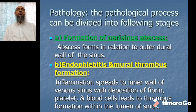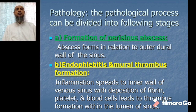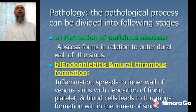The pathological process of lateral sinus thrombosis can be divided into four stages: number one, the formation of the peri-sinus abscess; number two, endophlebitis and mural thrombus formation; number three, obliteration of the sinus lumen and intra-sinus abscess; number four, extension of the thrombus.